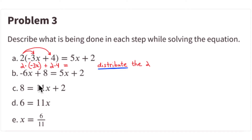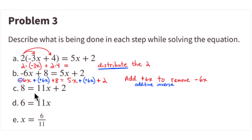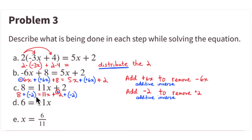Next: you can see that 11x comes from 6 + 5. Add a positive 6x to cancel the -6x. A positive 6x plus -6x cancels the -6x on the left. On the right, 5x + 6x gives 11x, so you have 8 = 11x + 2. This step uses the additive inverse to remove -6x. Then use the additive inverse again to remove the 2: add -2.